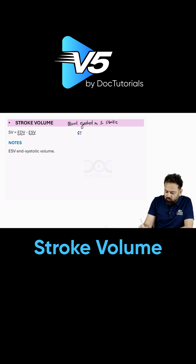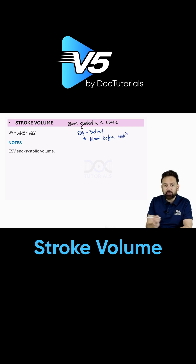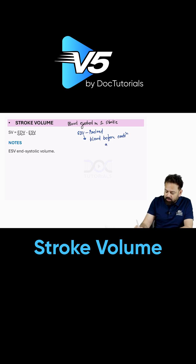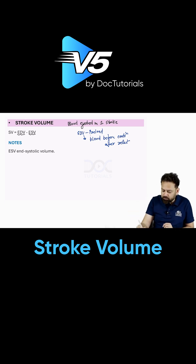End diastolic volume, which we will discuss in detail, is actually the preload. It is the amount of blood before contraction starts — or you can say the amount of blood after diastole or relaxation is complete, the total blood before contraction starts. That is the preload.